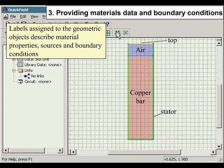Providing Materials Data and Boundary Conditions. Labels assigned to the geometric objects describe material properties, sources and boundary conditions.